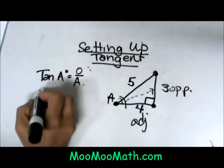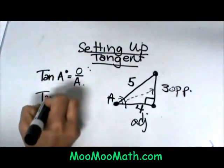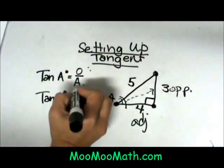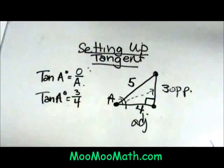So when I go over here to set up my ratio I am going to take the tangent of angle A and set up that ratio as 3 over 4. That is how you set up your trig ratios.